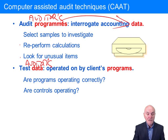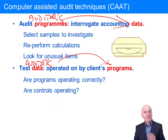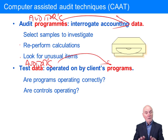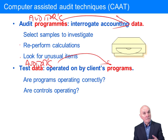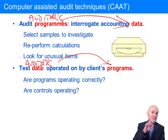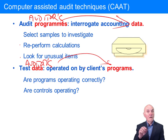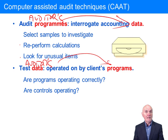So what you do is feed in your test data, which is going to be operated on by the client's program. For that particular example, I set myself up as a customer, give myself a credit limit of 1,000, and then go on the internet and try to order goods worth 1,500 to see if it actually refuses me. In practice, I would order goods at 800, then 100 — so we're up to 900 — and then order goods for 300, which would just push me over the credit limit. So it should say yes to the first two orders and no to the last order. That's how we can see that the client's programs are operating correctly.